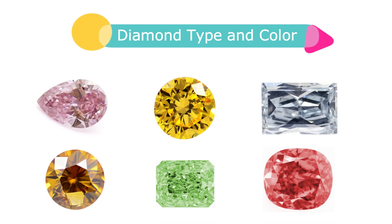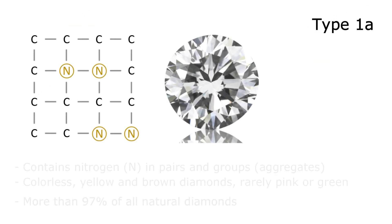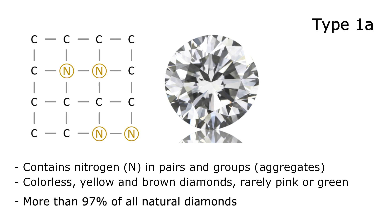Good to know: Diamond types are directly related to diamond color. Type 1a contains nitrogen atoms in pairs or aggregated in groups. They are colorless, yellow, brown diamonds, rarely pink, orange or green. More than 97% of all natural diamonds are of type 1a.